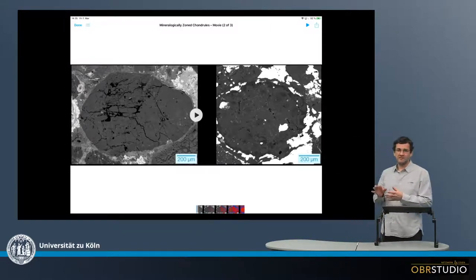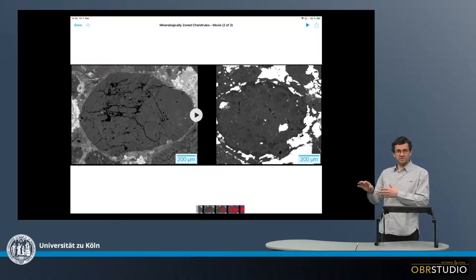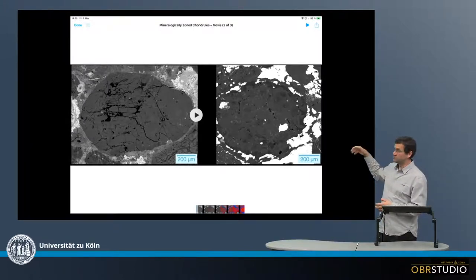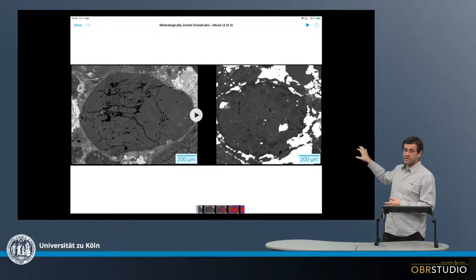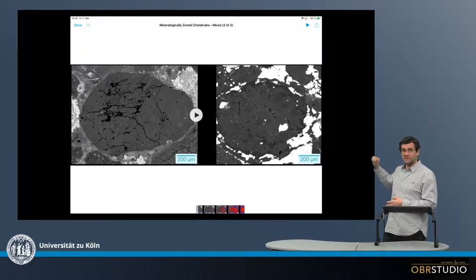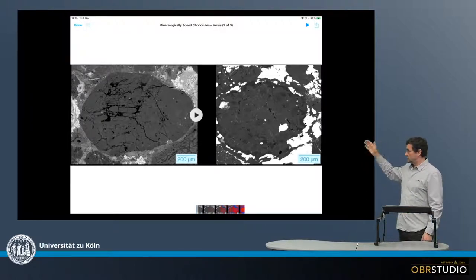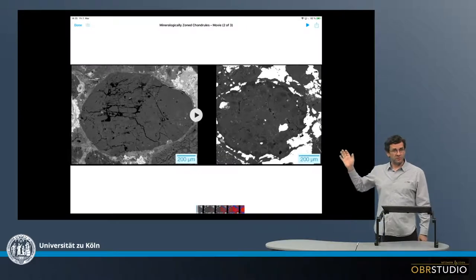On a phase map we can assign the different phases, minerals, a certain false color. So in this case we will assign olivine red and pyroxene blue. And here I overlaid the phase map with the backscatter electron image, so you can immediately see whether these are zoned or not.